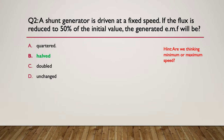If the flux is reduced by 50% of the initial value, the generated EMF will reduce. So if you reduce the amount of flux by half, you'll halve the voltage because the two are directly related to each other.